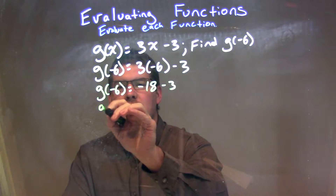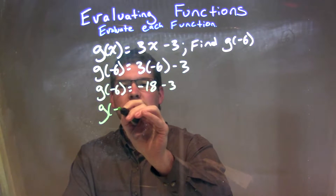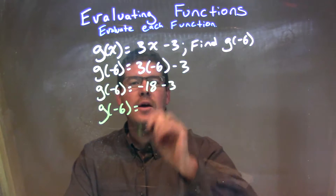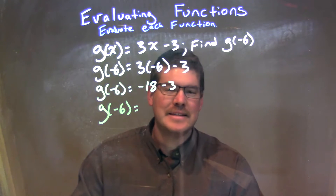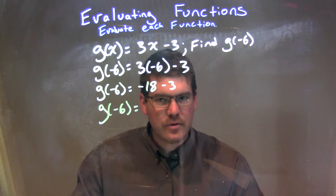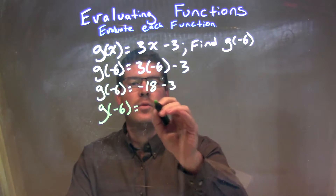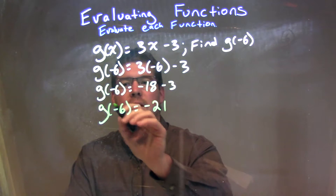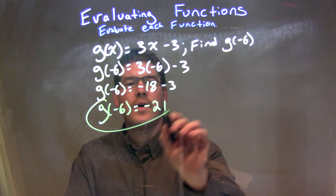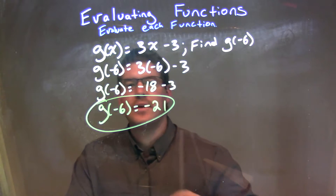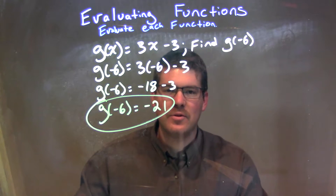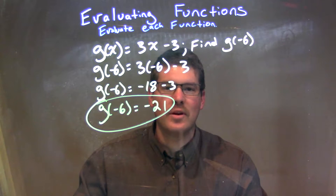So, then, g of negative 6 here is equal to, well, negative 18 minus 3 is a negative 21. So, we have a negative 21 right there. So, our final answer here is just g of negative 6 is equal to a negative 21.